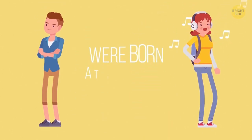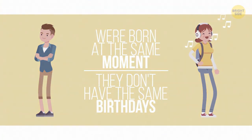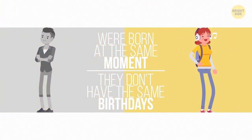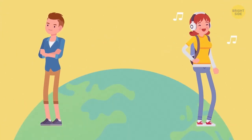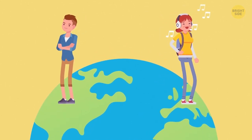6. Two people were born at the same moment, but they don't have the same birthdays. How is this possible? They were born in different time zones. In one of these zones, it was already the next day.